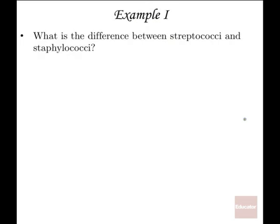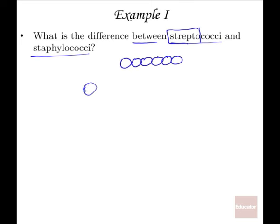The first question: what is the difference between streptococci and staphylococci? They sound very similar. One helpful mnemonic: 'strepto' sounds like 'street,' and streets are straight — so streptococci are a linear arrangement of spherical bacteria. Staphylococci, on the other hand, have a random arrangement that often looks like clusters of grapes. As far as shape, they are both cocci, but arranged differently.